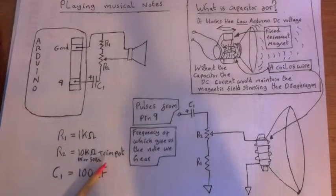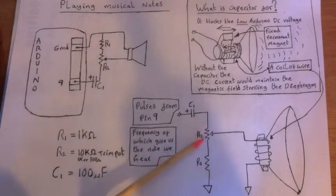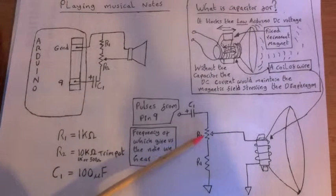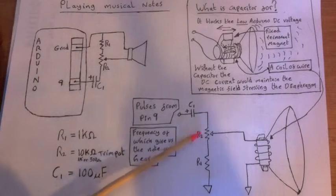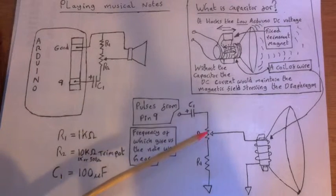This R2 resistor is a trim pot. So it's like a volume control if you like. So that's a trim pot resistor. Now again, this is just a voltage divider which we looked at before. You've got some resistance on the top here and some resistance on the bottom.